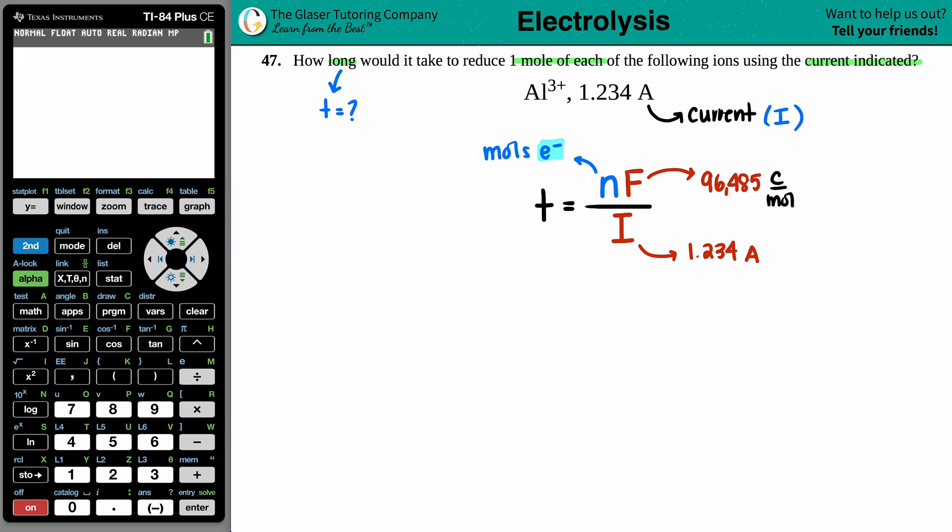So in this case, they told us that we had one mole of the Al³⁺. So we have one mole of the Al³⁺, but that's not good enough. I need to find out how many moles of electrons are transferred in Al³⁺.